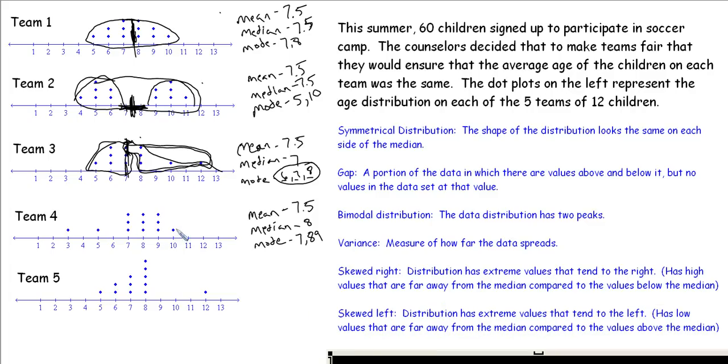This distribution would be skewed left, as you can see. If we sketch out the data, it stretches out to the left. So it's skewed to the left or skewed low. That simply means that the low values are further away from the median than the upper values are away from the median on the other side.